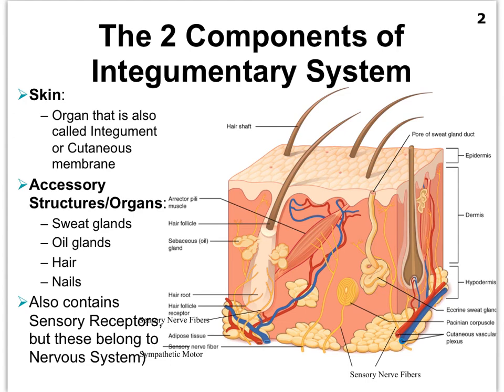By definition, an organ system must be made up of organs that work together, and that is the case in the integumentary system as well. The biggest organ in the integumentary system is the skin, which is made up of this epithelial layer here in the light beige, and then the fleshy-colored layer here, respectively called the epidermis and the dermis.